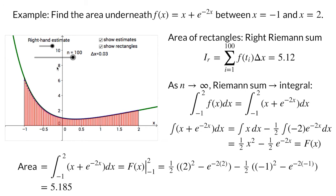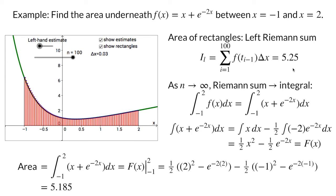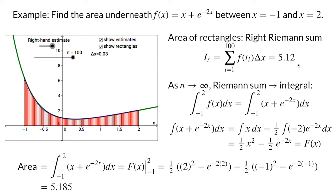How does this actual area compare to our estimates with the rectangles? When we have 100 rectangles, the left Riemann sum gives us 5.25 and the right Riemann sum gives us 5.12. These answers were converging to the correct answer of 5.185. We would need a lot more than 100 rectangles to give us three correct digits. Thankfully, we can avoid calculating a huge Riemann sum and just calculate the integral directly.